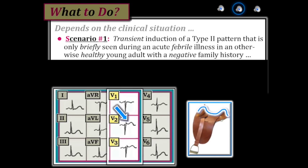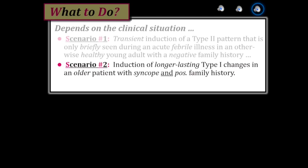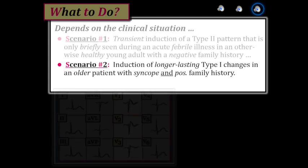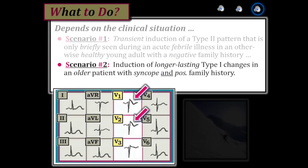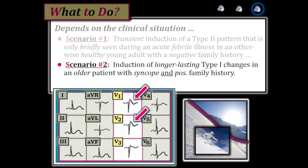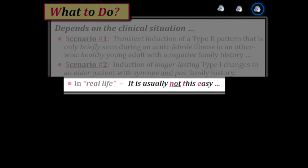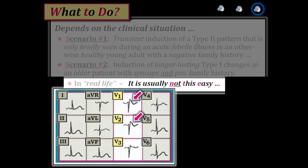Contrast this with situation two, in which the patient is older and presents with syncope and a positive family history. If the ECG shows a typical type 1 ski-slope rapid descent of the ST segment, there should be little doubt about the need for referral. That said, in real life it is usually not this easy — most patients will not present with both symptoms and a typical diagnostic type 1 Brugada ECG pattern, so judgment is needed. You can take comfort in the clinical reality that your cardiologists will not always agree on each case.